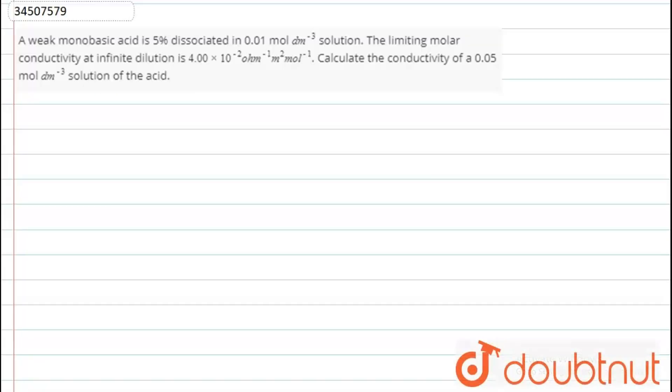This question has been asked. A weak monobasic acid is 5% dissociated in 0.01 mol per decimeter cube solution. The limiting molar conductance at infinite dilation is 4 into 10 to the power minus 2. We have to calculate the conductivity of 0.05 mol per decimeter cube solution.